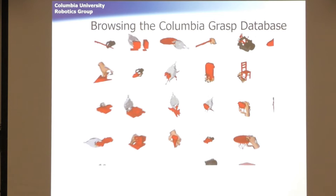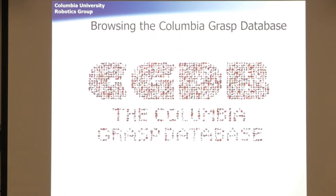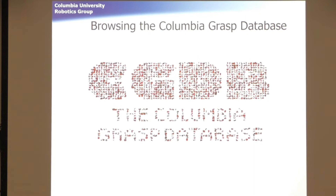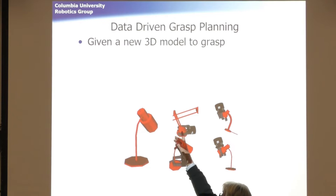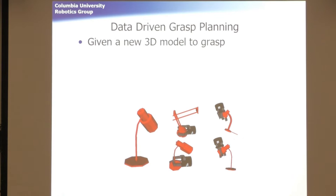There are a lot of grasps, but you can index them — which is the beauty of it. For data-driven grasping, say we have a new 3D model to grasp that we've never seen before. In our database, we have other similar objects. We can find a shape match between this new object and those others, take the grasp from the matching shape, and apply it to this object. If you have enough data, enough objects, covering a range of geometry and scales, it works pretty well. It's geometry-based, so it doesn't work on material properties necessarily.